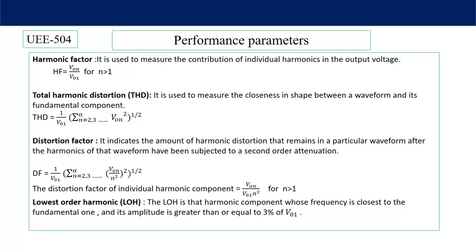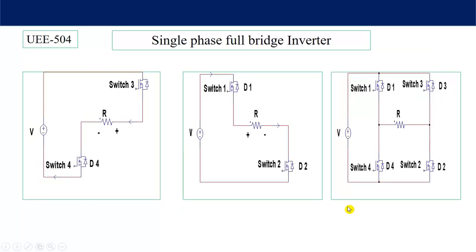Let's discuss the single-phase full-bridge inverter. Just like the single-phase half-bridge inverter, here also a DC source is connected across different switches. The load considered is resistive, but here there are four switches — 1, 2, 3, and 4. At any time, switches 1 and 2 will operate while 3 and 4 will be off, and when 3 and 4 are operated, then 1 and 2 will be off.